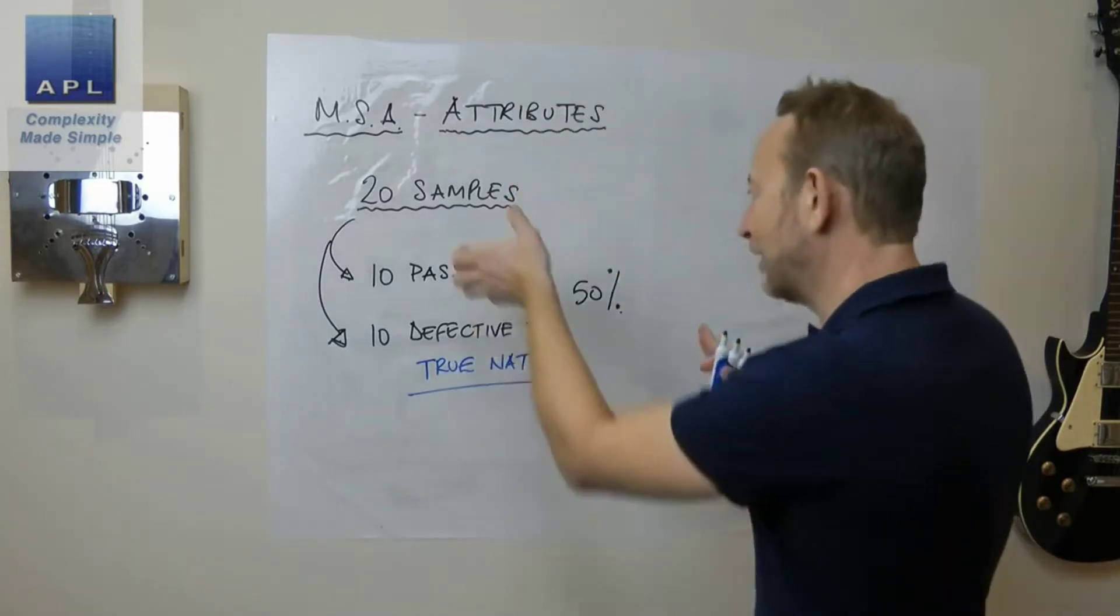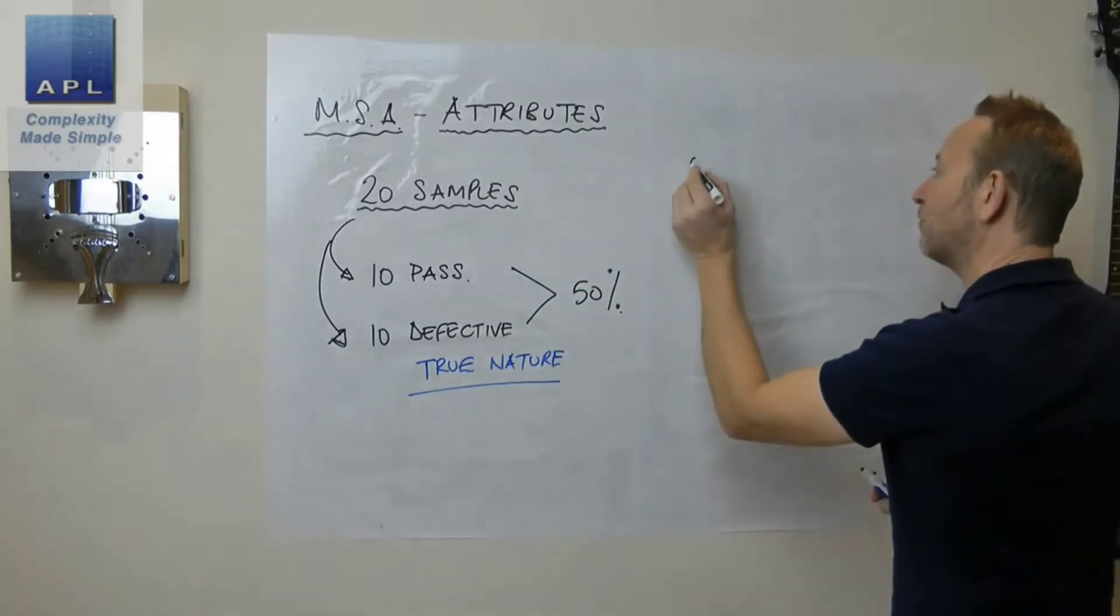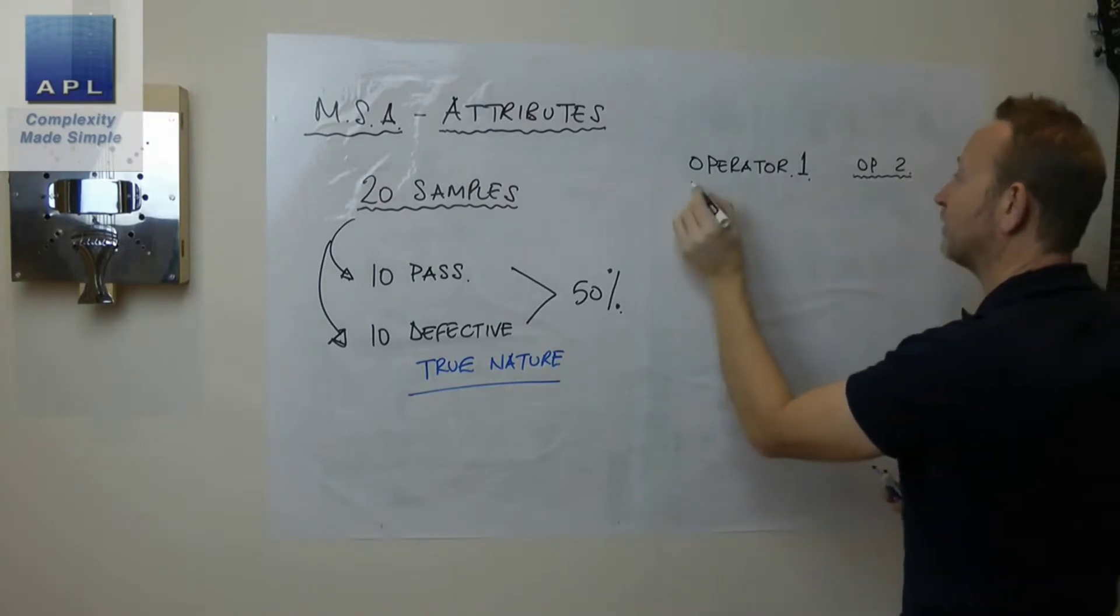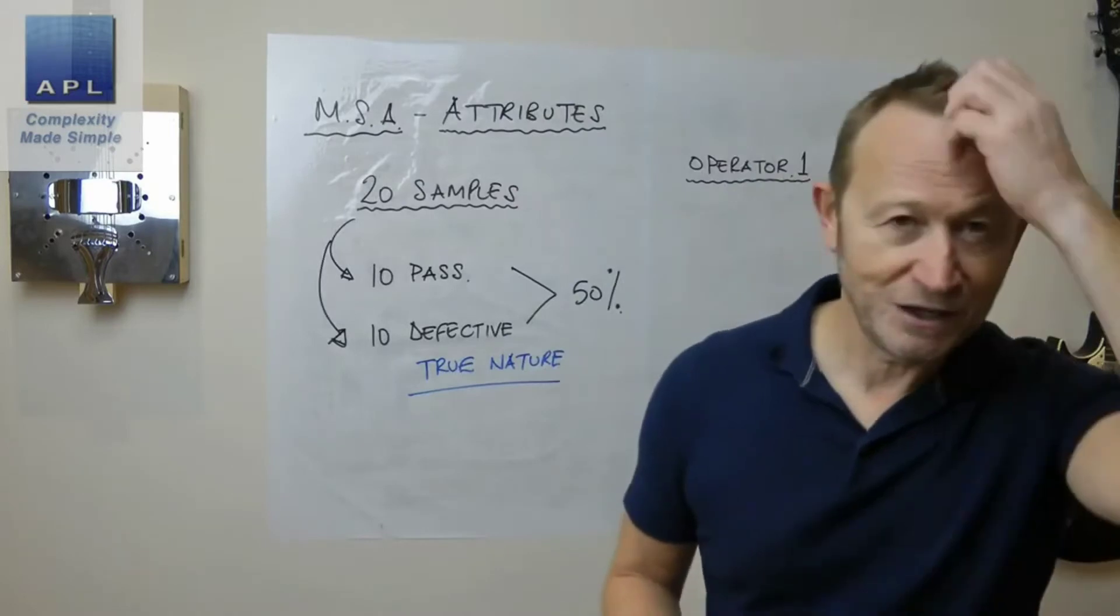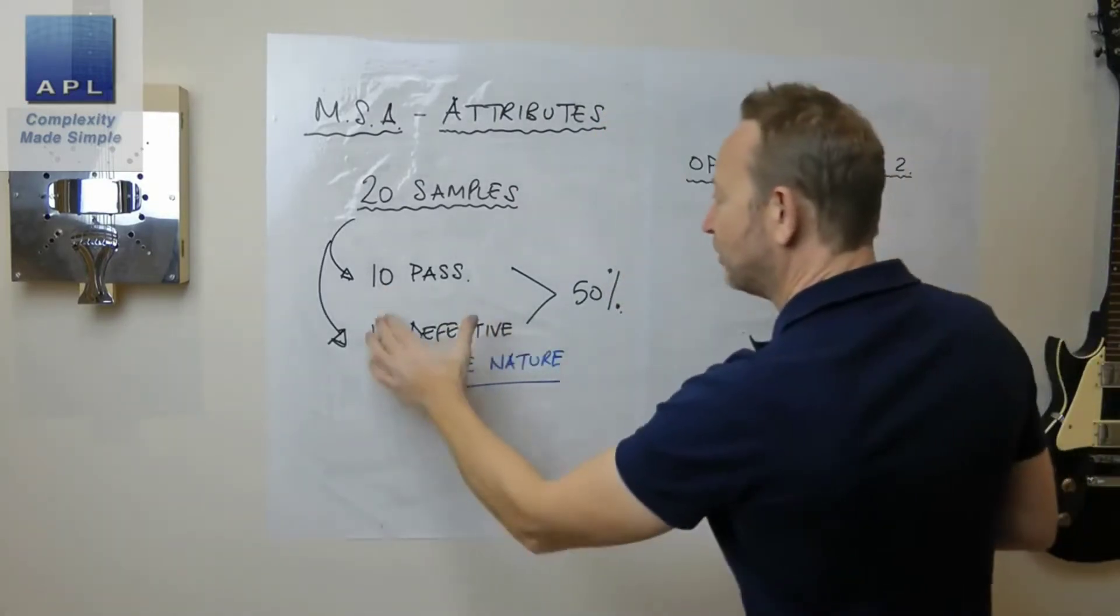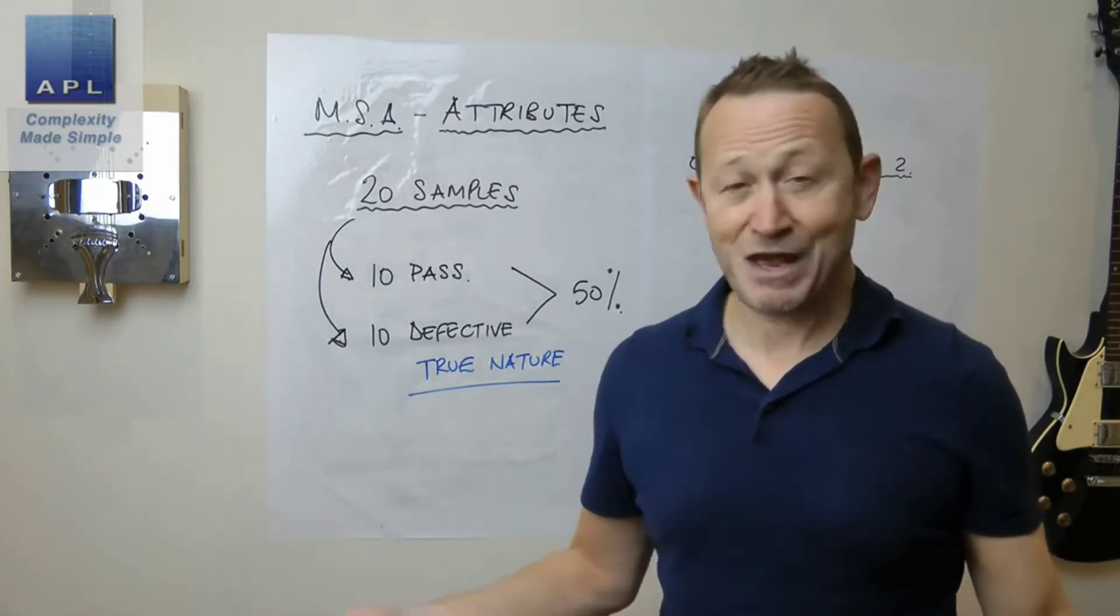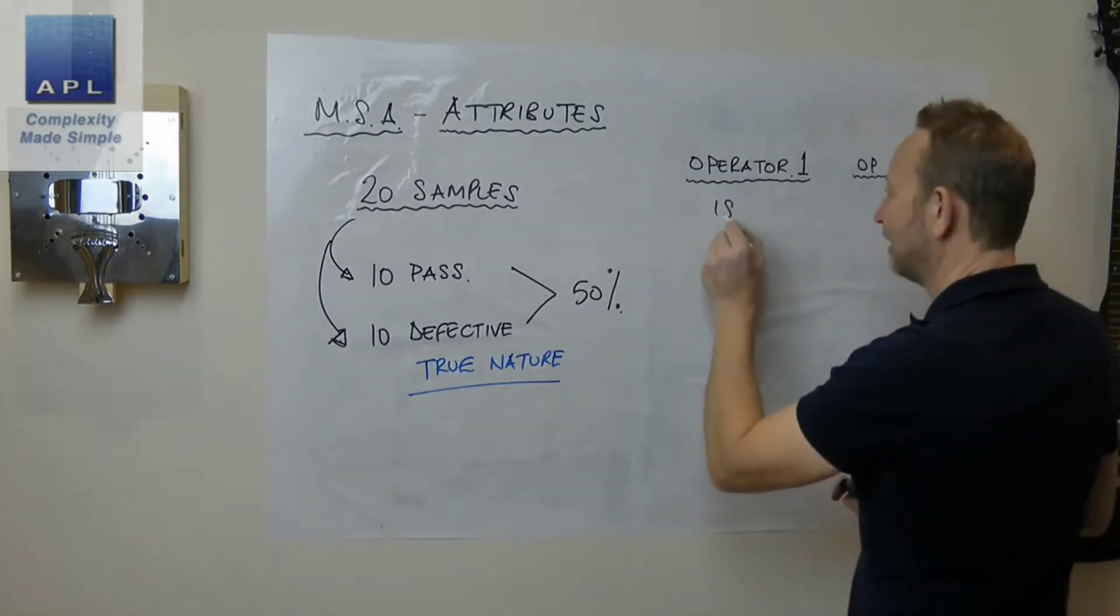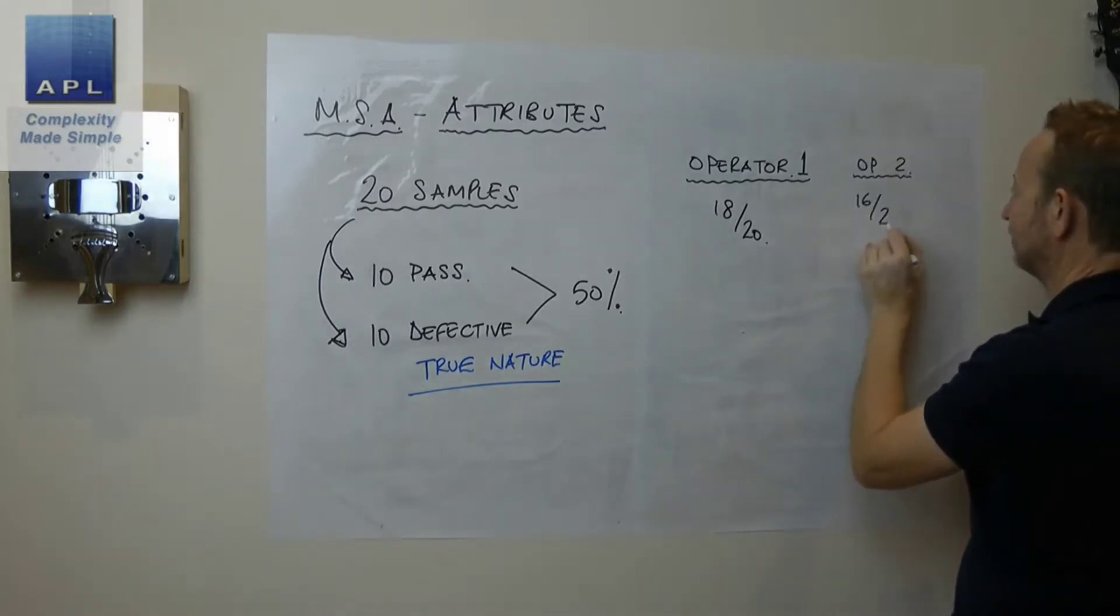So that's really important, that it's 50-50 when you set them up. Then all you're basically going to do is you're probably going to pick an operator, operator one, operator two. Could be an inspection machine by the way, these days there's lots of inspection cameras, so this could be a camera if it's an automatic inspection process. Then what you're going to do is offer up the 20 parts and give them a little 20 question exam almost, and you're going to see how many they get right.